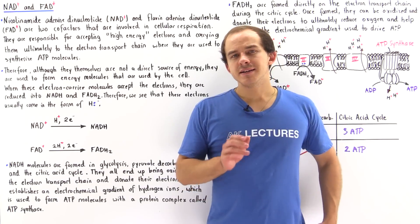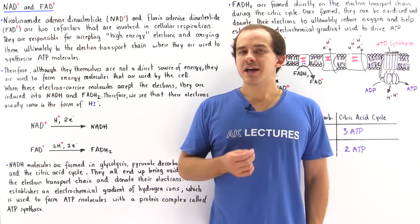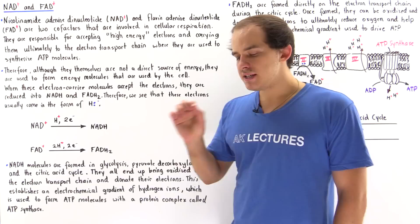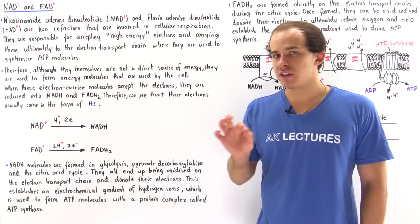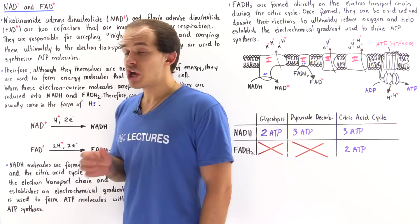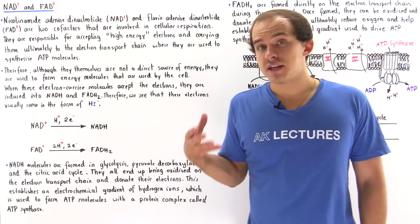NAD+ and FAD+ are two molecules that are essential for the synthesis of ATP during cellular respiration. NAD+ is known as nicotinamide adenine dinucleotide and FAD+ is known as flavin adenine dinucleotide. Both of these molecules are cofactors, meaning they are non-protein molecules that assist enzymes involved in cellular respiration.